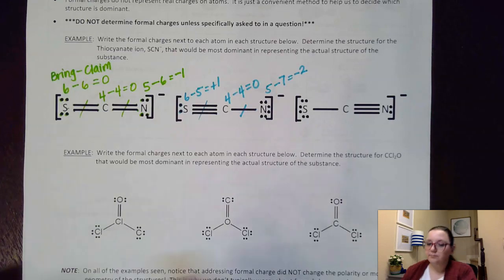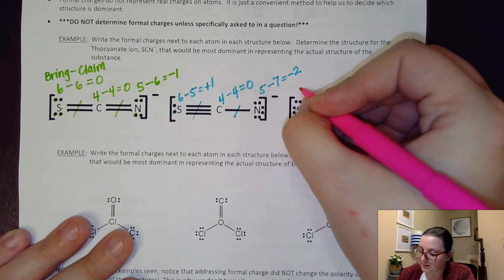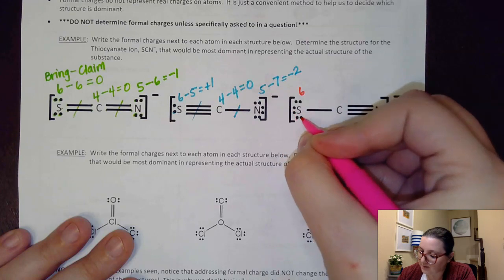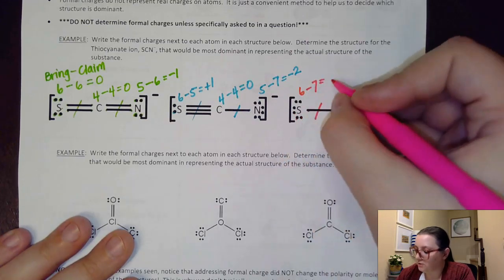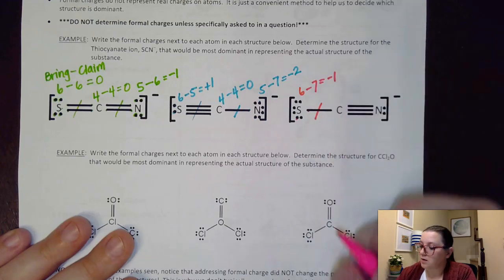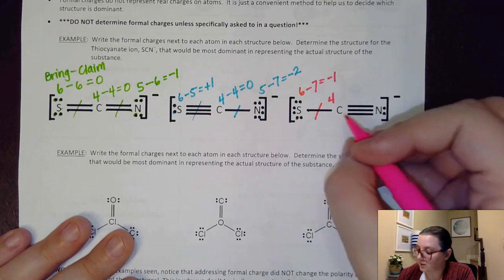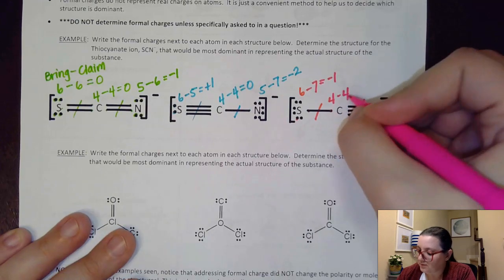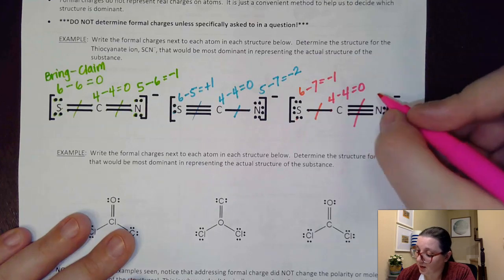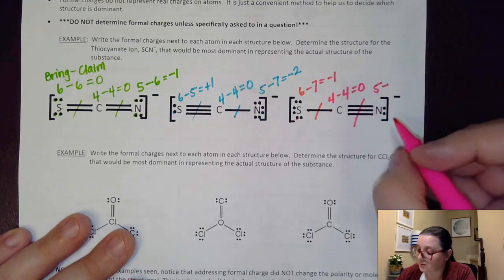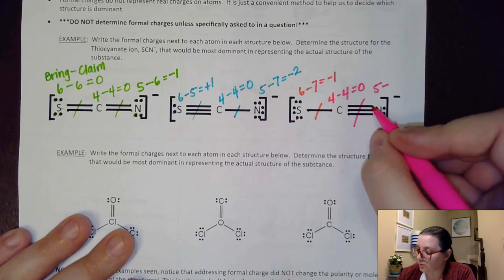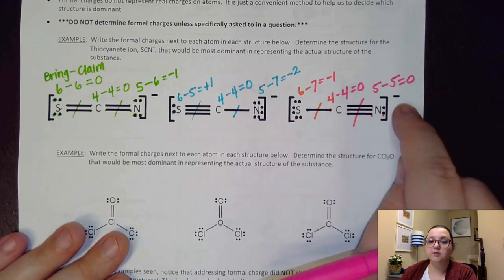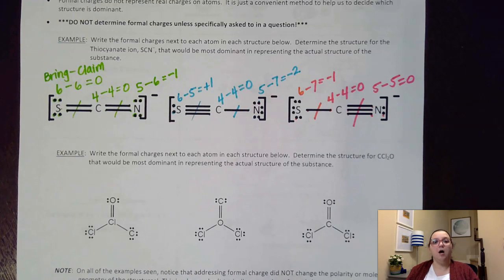For the third structure: sulfur brings six, claims one, two, three, four, five, six, seven — formal charge of negative one. Carbon brings four, claims half of each bond — one, two, three, four — formal charge of zero. Nitrogen brings five, claims one, two, three, four, five — formal charge of zero. Again, negative one plus zero plus zero tallies up to the overall negative one charge on the polyatomic ion.